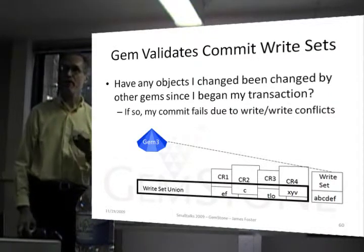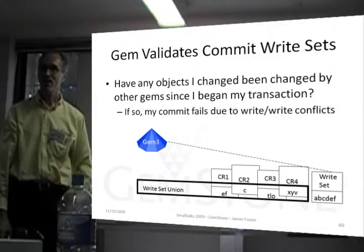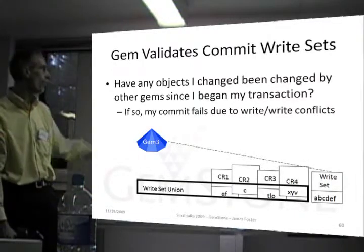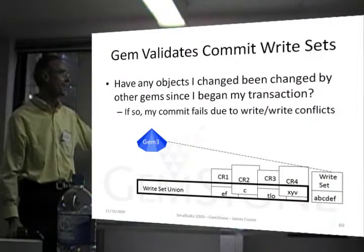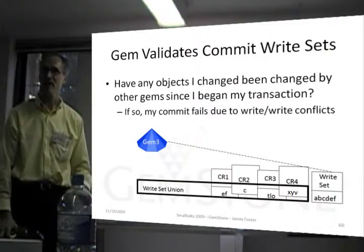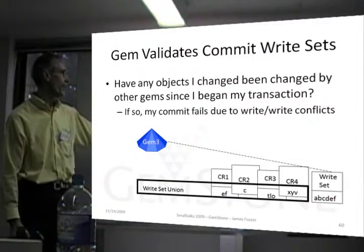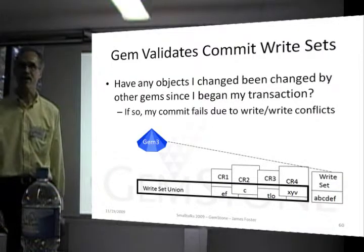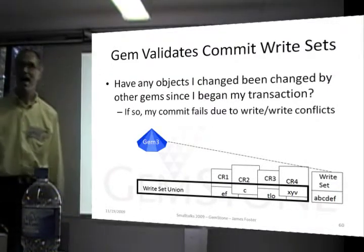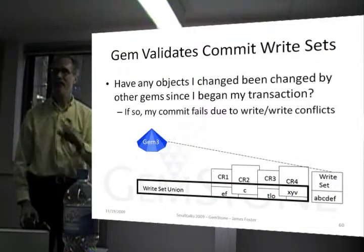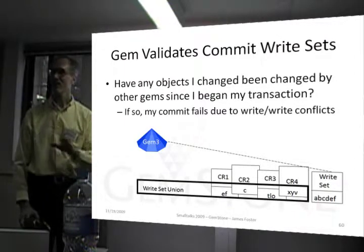Once you have the commit token, the gem has to validate the write set. This is the big part of it, and this is where the commit record backlog is the problem. The gem asks: have any objects I changed been changed by someone else since I began my transaction? If so, then we have a conflict; if not, then we don't. I have to look at every commit record after the one I started with and ask, has anyone written any of the objects I plan to write? If so, there's a conflict.